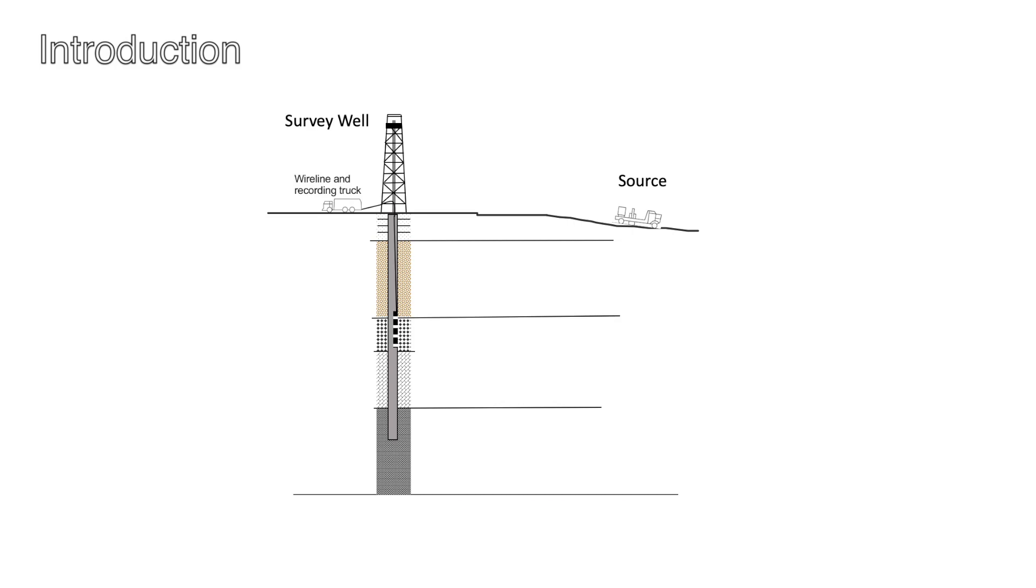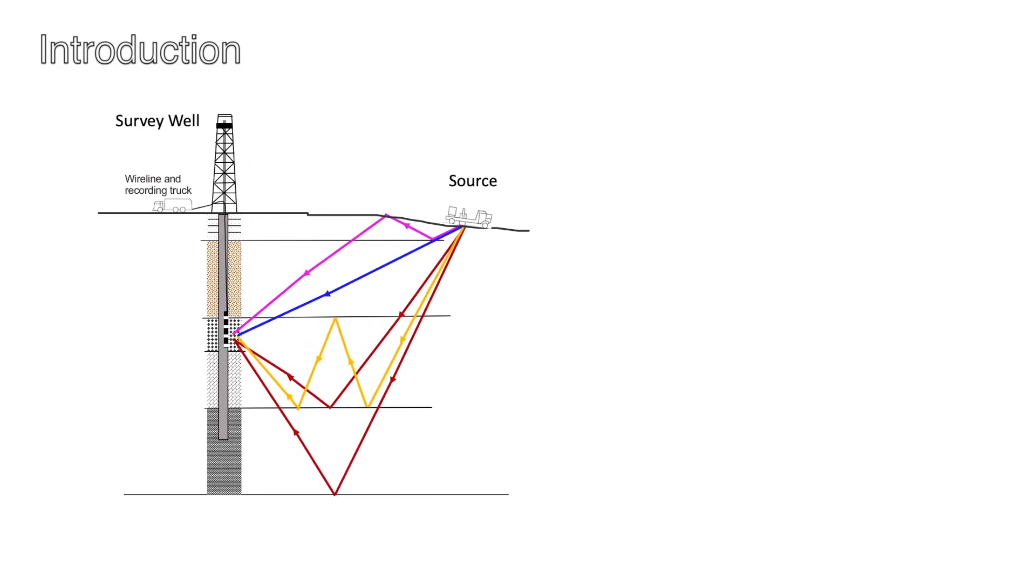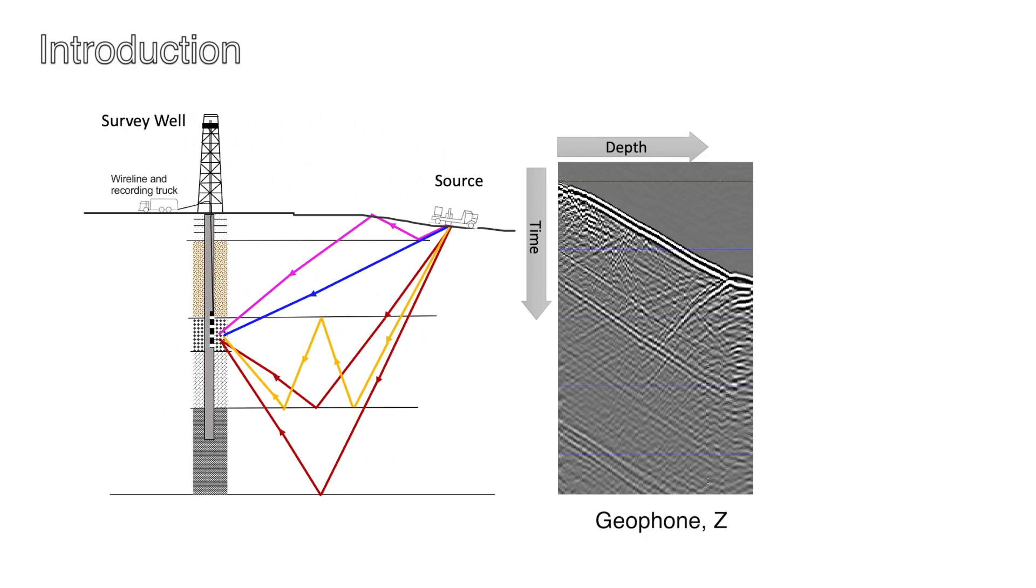With the presence of subsurface reflectors, the main events a receiver would record include the down-going direct arrivals, the down-going multiples, the up-going primary reflections, and the up-going multiples. An example of the recorded shot gather on the receiver side is plotted with the horizontal axis at the increase in depth to the right, the vertical axis at the increase in time to the bottom. It displays a Z-component shot gather recorded by the geophones.